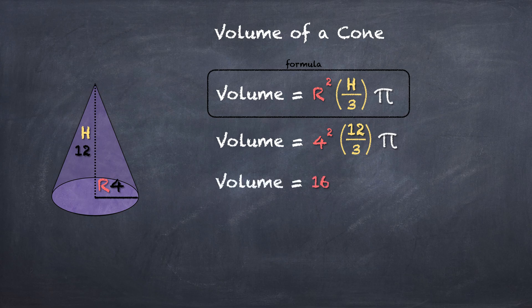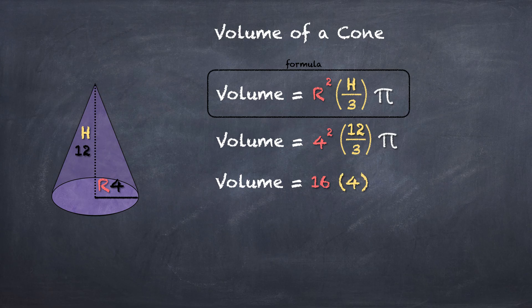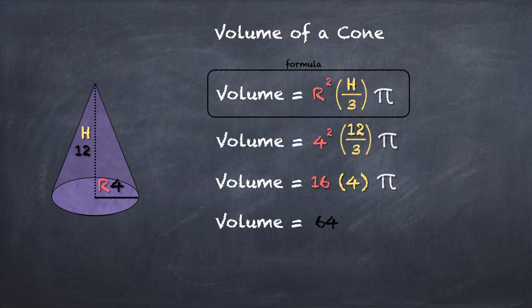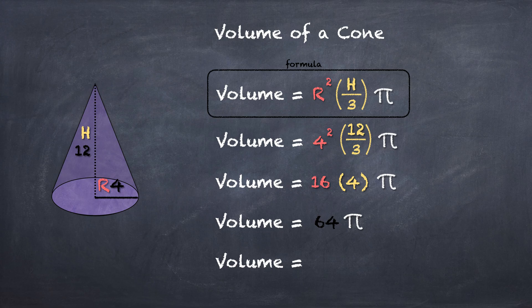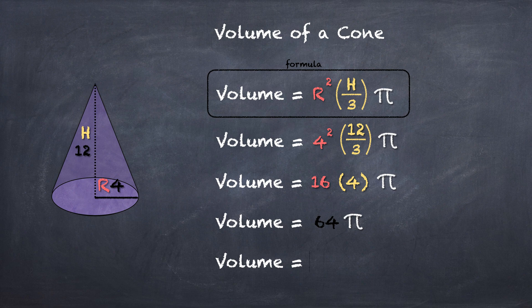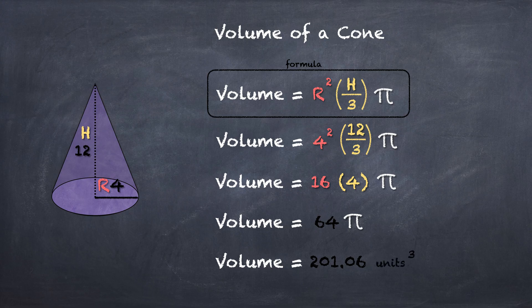4² is 16. 12 divided by 3 is 4. So now you got 16 times 4, which is 64 times π. If they want it in 64π, sometimes that's the answer. Sometimes they want the whole number. So 64 times π is essentially 201.06 units cubed.